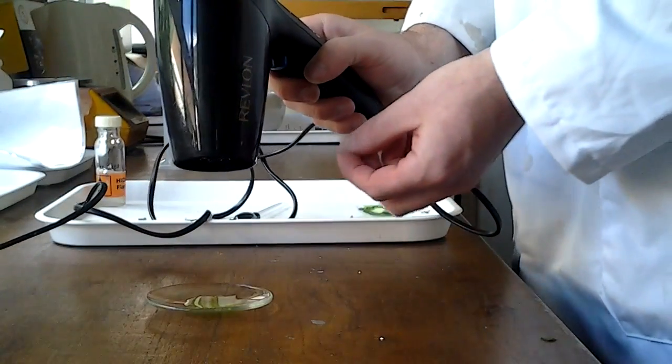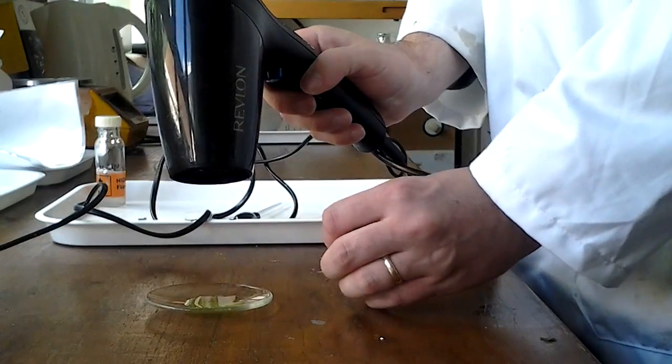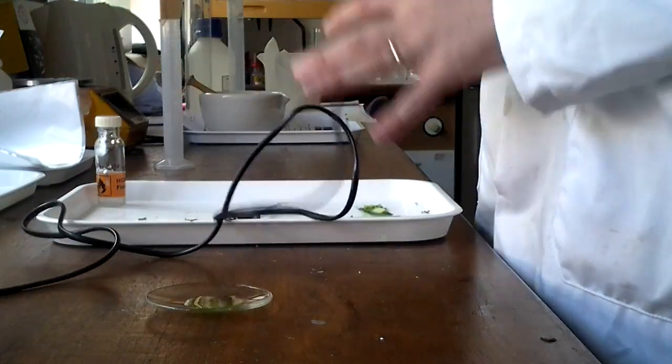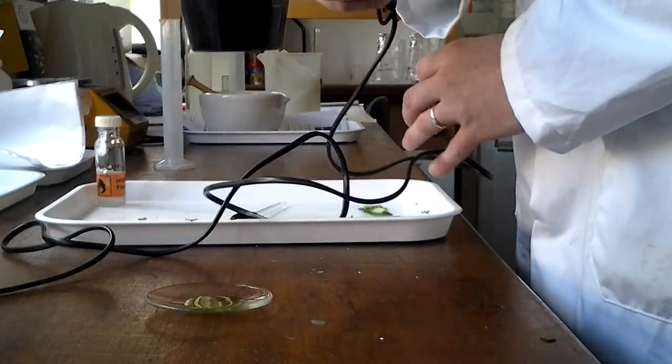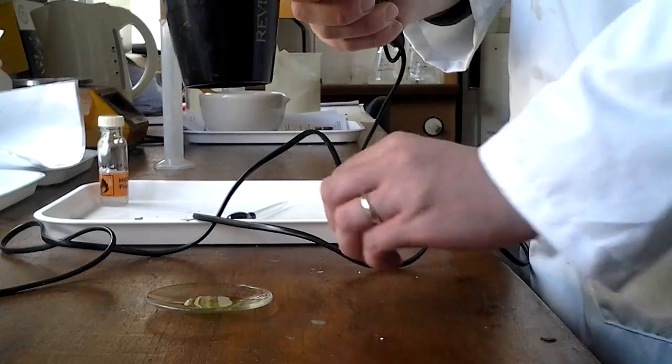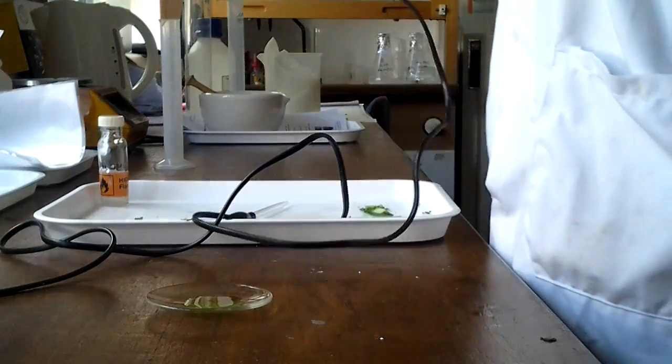But if you do that, you run the risk of your green liquid that you've worked so hard to get jumping out all over the desk. So it's better to start off up high, gradually bring it down until you're pretty sure that you're getting maximum airflow, but you're not in any danger of blowing the liquid out of the watch glass.